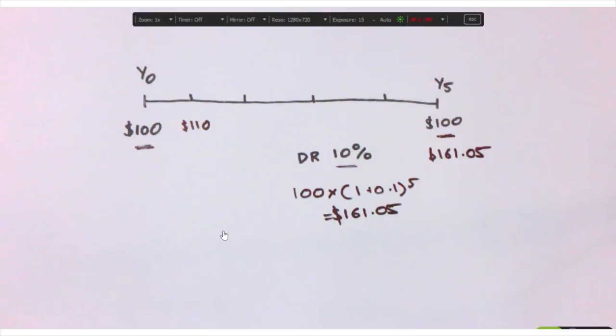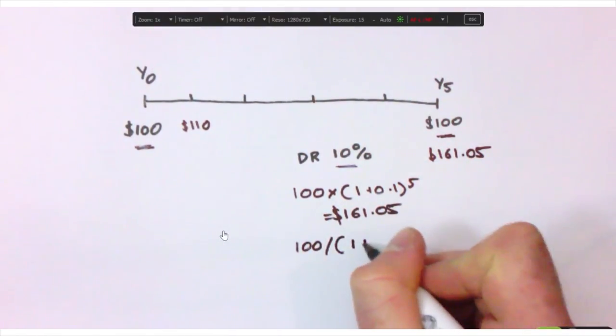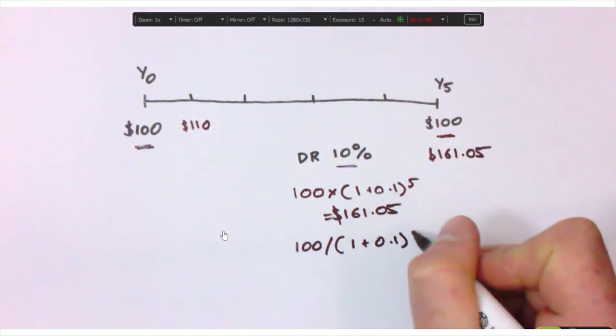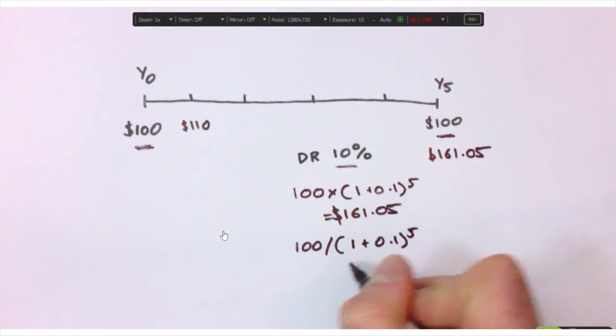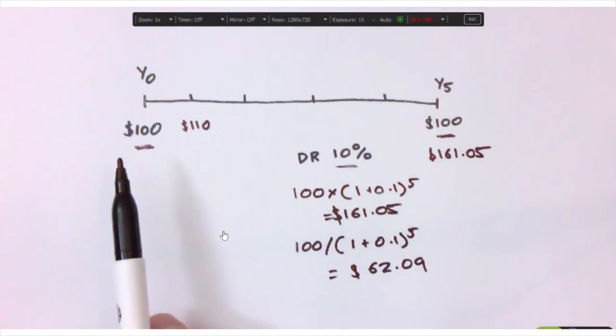Conversely, to work out what the present value of receiving $100 in five years' time is, we reverse the formula and divide 100 by one plus our discount rate to the power of the year, in this case, five, which equals $62.09. So the present value of $100 received in five years' time is actually only $62. So $100 is worth $62 today, because you could put that money in the bank now at 10% interest, and you would expect that to become $100 in five years' time.